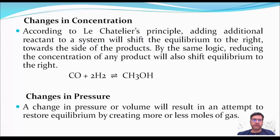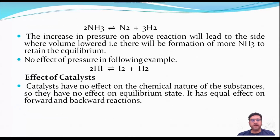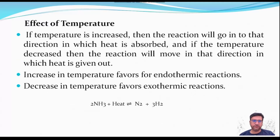Changes in concentration: If we increase the concentration of reactants, the reaction shifts from left to right. If we reduce or remove some of the product, the reaction also proceeds from left to right. Changes in pressure: An increase in pressure shifts the equilibrium to the side with fewer moles of gas — for example, favouring the formation of more ammonia. If the number of moles of gas is equal on both sides, pressure has no effect. The effect of a catalyst is equal on both forward and backward reactions. Regarding temperature, an increase favours the endothermic reaction, while a decrease favours the exothermic reaction.